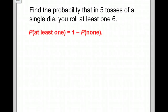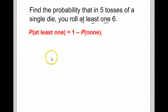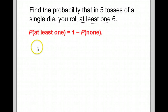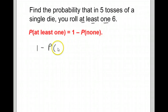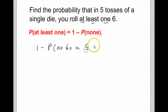So we're going to find the probability that in five tosses of a single die you roll at least one six — and there's the 'at least one.' You've got to be looking for that. When you see 'at least one,' we're going to use this rule: the probability of at least one is one minus the probability of none. In this case, one minus the probability of no sixes in five tosses — that's what we mean by none here.